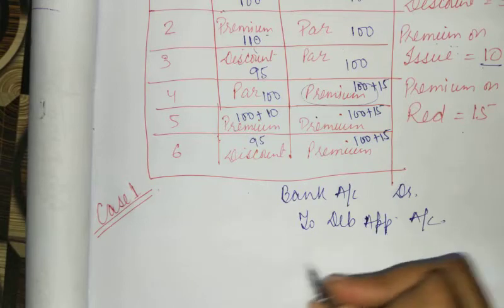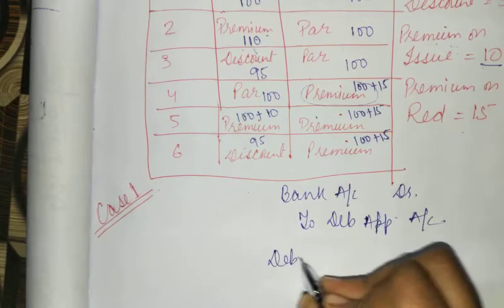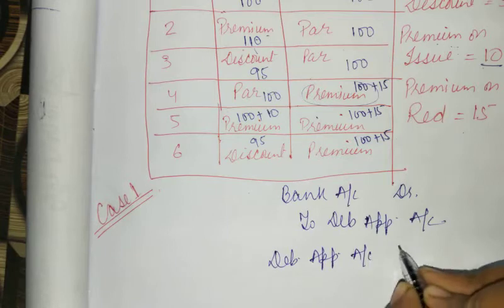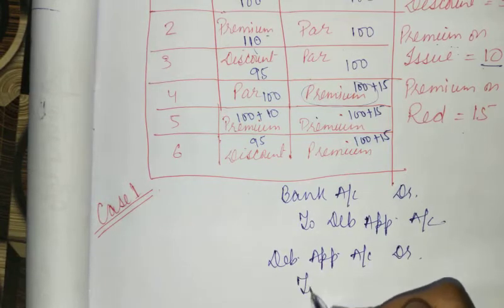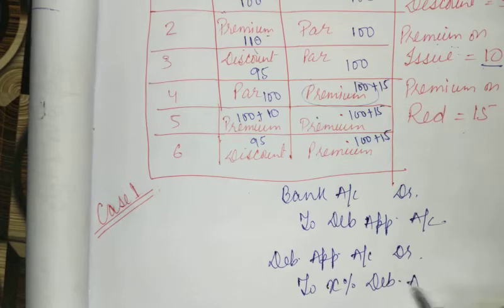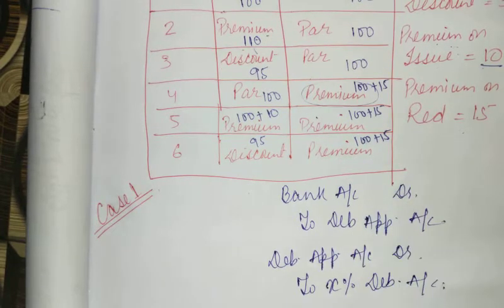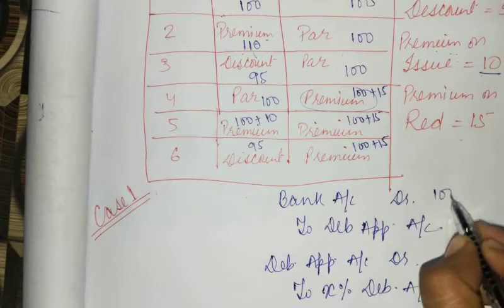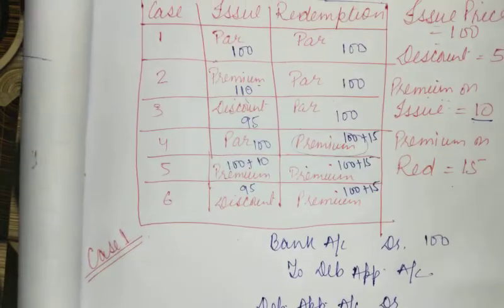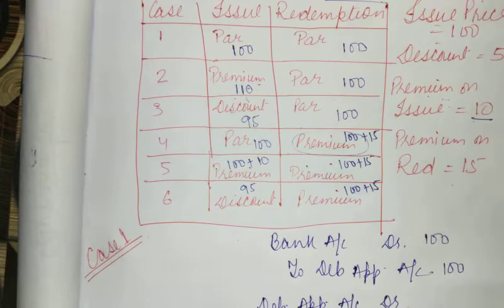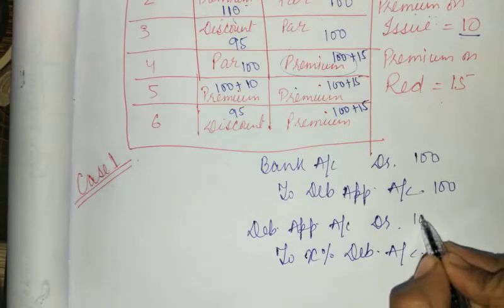This was the entry. Then you do: Debenture Application Account Dr. To X% Debenture Account. This was the entry we were doing. And here at par — this is the par entry. Now we do the entry of 100 rupees and we give this entry to 100 rupees for the issue.